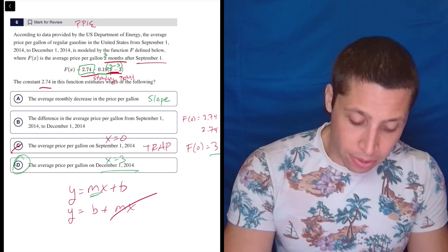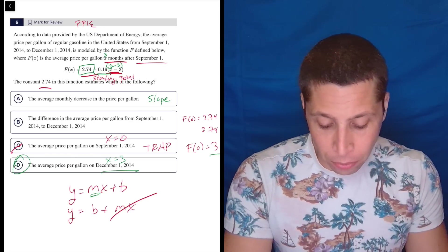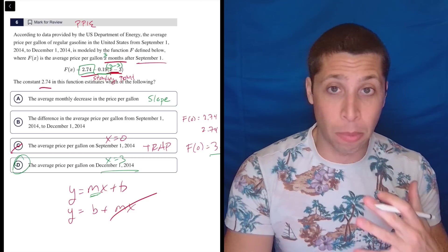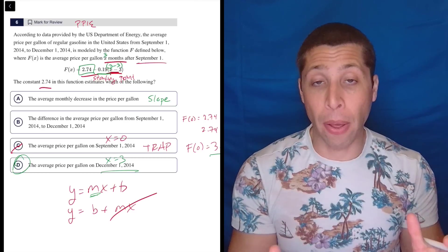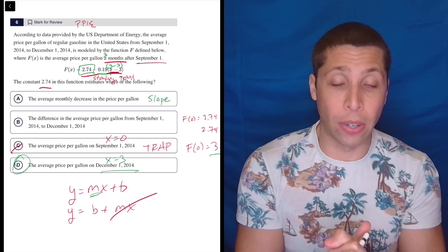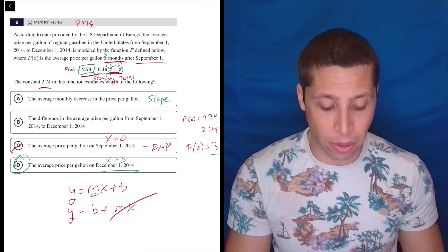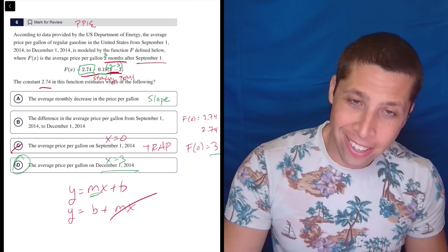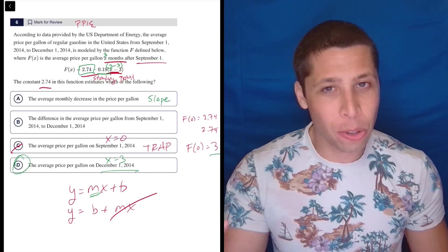And then B, the difference in the average price per gallon from September 1st to December 1st. Well, again, we could just get those two values and subtract. And then just without dividing by 3, we'd be able to see that that is the total difference. But it's not 2.74. I'm not going to bother with it.